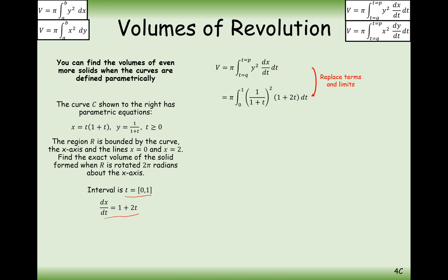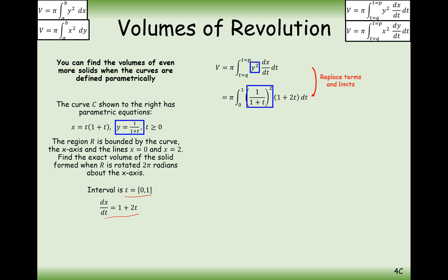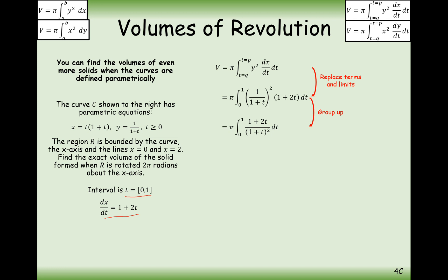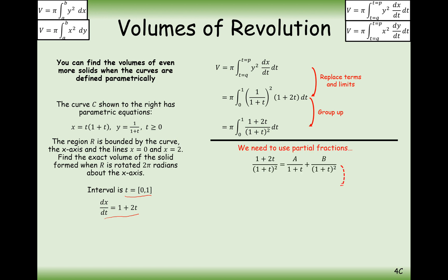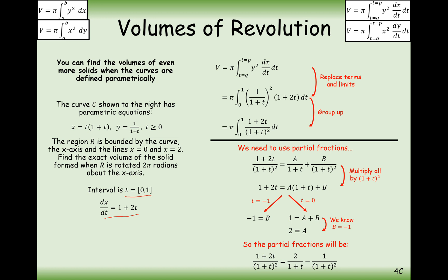Substituting everything in, we have pi times the integral of [1/(1+t)]² multiplied by (1 + 2t) dt. To integrate this, we use partial fractions. Multiplying out and substituting strategic values for t, we find B = -1 and A = 2, splitting the expression into partial fractions ready for integration.